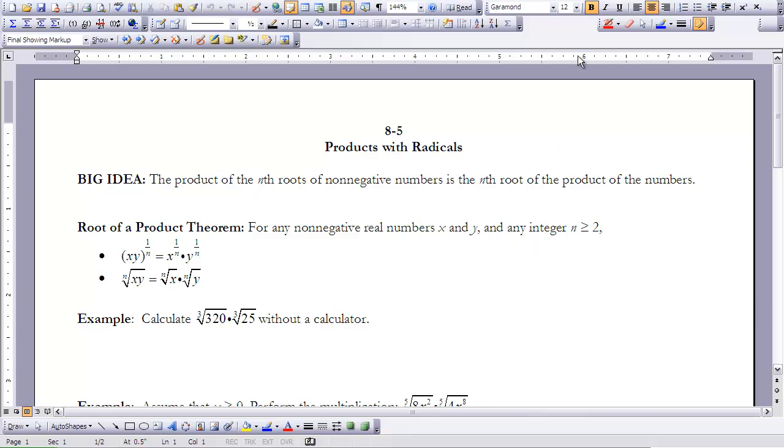Before we get started, I'd like to recall some information from previous lessons: the square root of a times b is the same as the square root of a times the square root of b. This is an extension of the power of product postulate, because this could be written as a times b raised to the one-half power, which is the same as a to the one-half times b to the one-half.